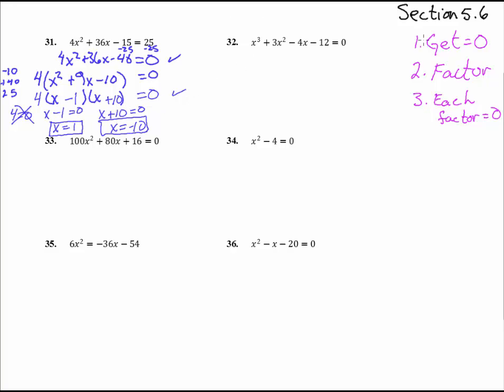Alright. Let's try number 32. Step number 1. Get it equal to 0. Check. Step number 2. Factor it. Now, can we pull out a greatest common factor? Remember, that's the first thing we always do with factoring. Can we pull out a greatest common factor? No.